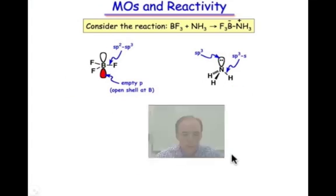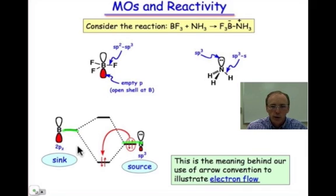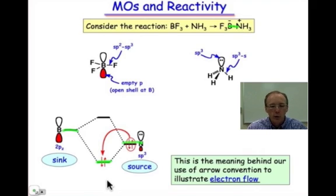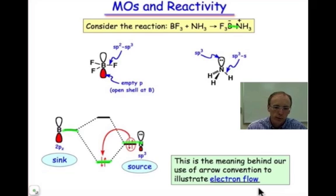We can construct a molecular orbital diagram for that interaction, shown here. The HOMO of nitrogen will combine with the empty orbital on boron. There's one pair of electrons that will fall into the new molecular orbital that creates that boron-nitrogen sigma bond. The curved arrows shown here remind us of the curved arrow convention that we're typically used to thinking about when we write organic mechanisms. This is the most important pair of electrons involved in reactivity, coming from the HOMO that interacts with boron's LUMO.